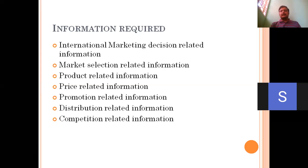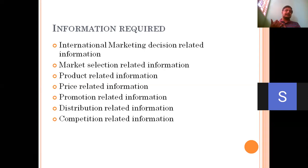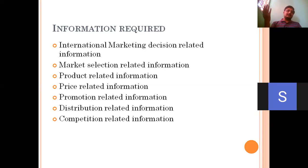The first thing is international marketing decision-related information — what kind of marketing decisions they need to take. This includes fixing up pricing strategies, product packaging, and promotion activities. For example, consider a simple case where some foreign company would like to enter India.